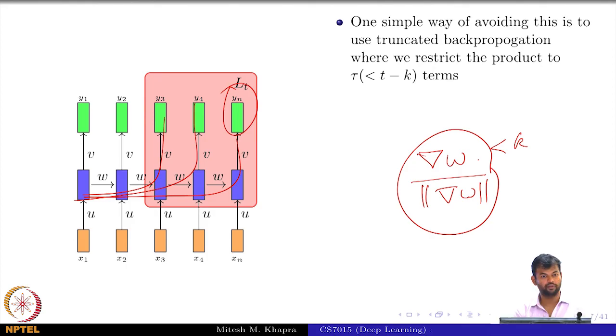So, that is backpropagation through time with exploding and vanishing gradients and then the solution for that or a hack for that is truncated backpropagation. We are not yet done with this problem, we will again look at other solutions for handling this which will lead us to LSTMs which is long short term memory cells and gated recurrent units. So, that is what we will do in the next lecture.